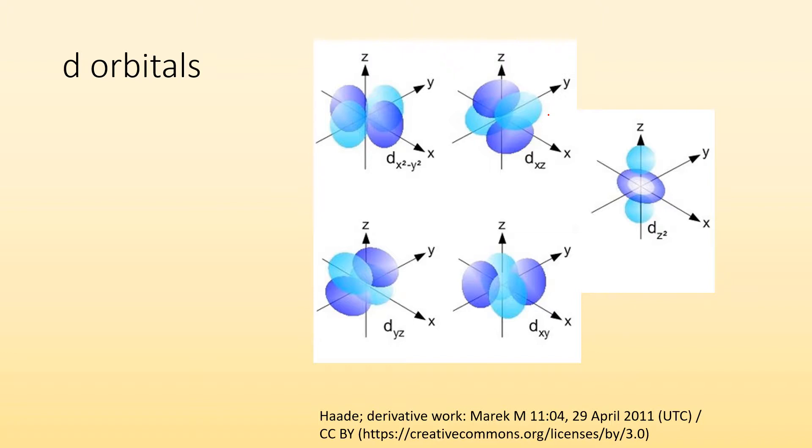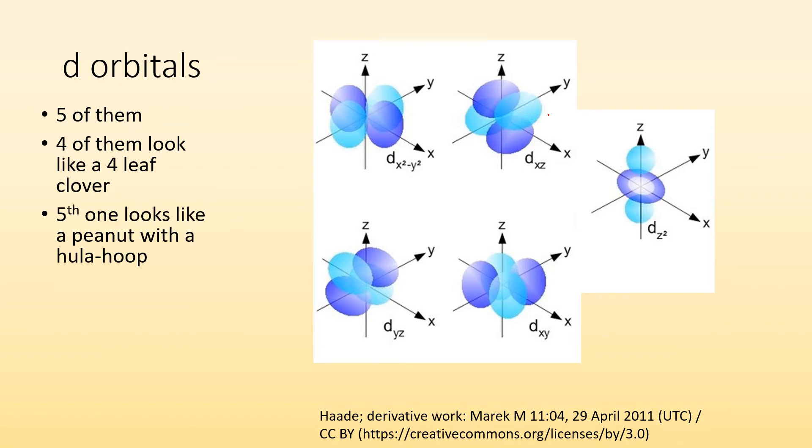Now the D orbitals start to get a little messy. There's five of them. Four of them look like a four-leaf clover. You can kind of see it. And the fifth one looks kind of like a peanut playing with a hula hoop. But interestingly enough, all of them have the same energy associated with them, despite different shapes. So their shapes haven't affected the energy for them at all.